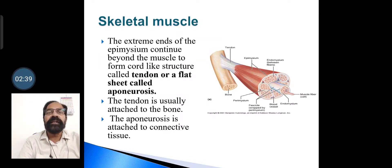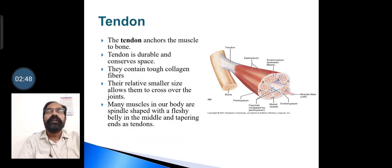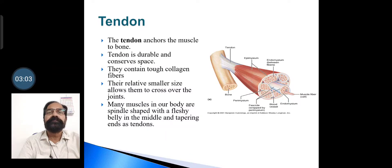The tendon is usually attached to the bone, whereas the aponeurosis is attached by connective tissue. Tendon anchors the muscle to bone. Tendon is durable and conserves space. It contains tough collagen fibers. Their relative smaller size allows them to cross over the joints. Many muscles in our body are spindle-shaped, with a fleshy belly in the middle and tapering ends called tendons.